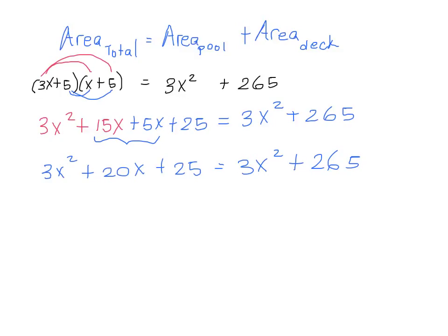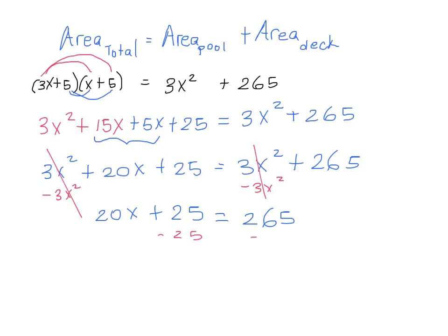We can join like terms to get 3x² + 20x + 25 = 3x² + 265. To solve this, we subtract 3x² from both sides — and conveniently that cancels — leaving us with 20x + 25 = 265. We move the 25 to the other side: 20x = 265 − 25 = 240. Finally, dividing both sides by 20, we get x = 240 ÷ 20, which is 12.